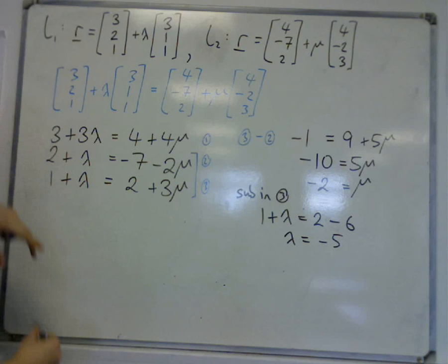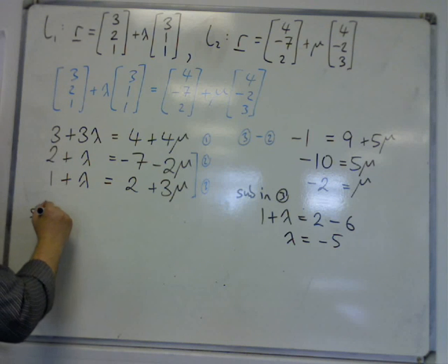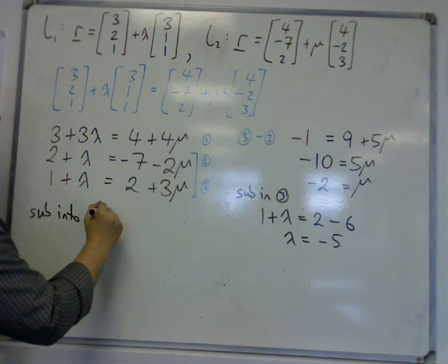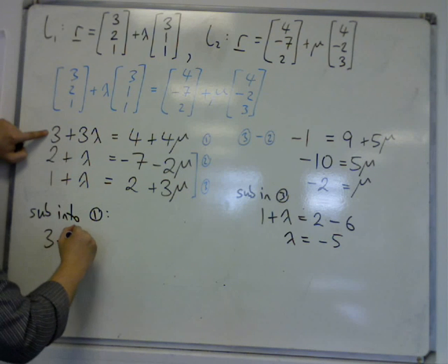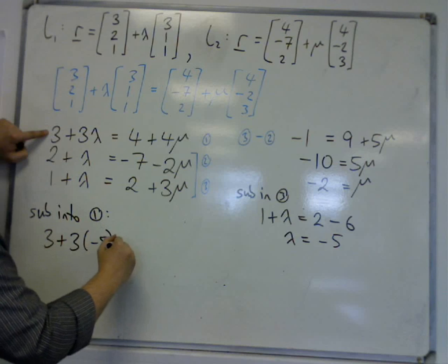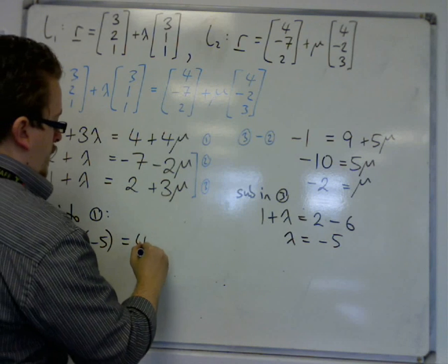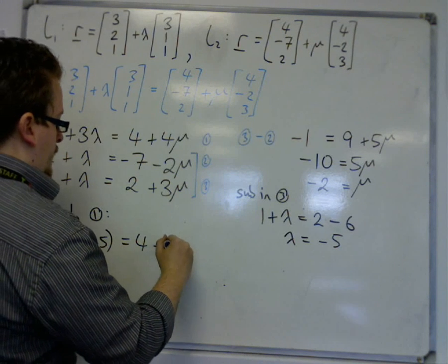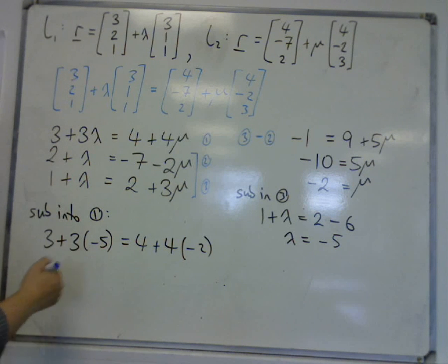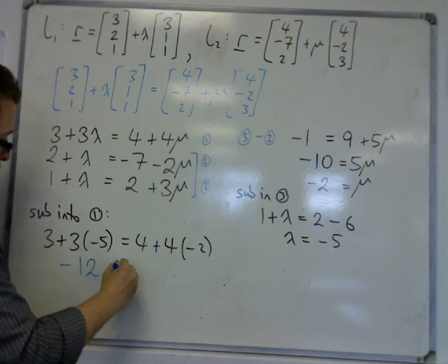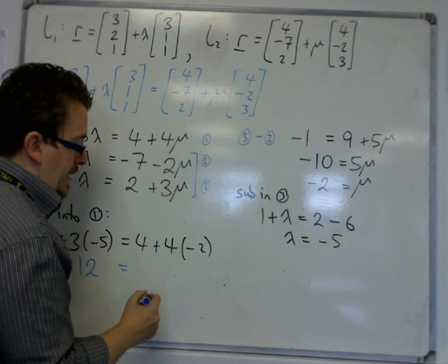So we substitute into equation 1. We have 3 plus 3 lots of lambda, so 3 plus 3 lots of minus 5 is equal to 4 plus 4 lots of mu, so that's 4 lots of minus 2. On the left hand side we have 3 take away 15, which is minus 12, and on the right hand side we have 4 take away 8, which is minus 4.